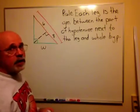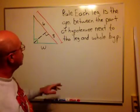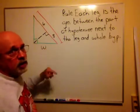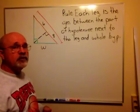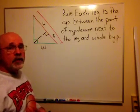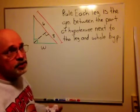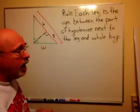Each leg of the right triangle, I've shown the legs of our original right triangle in green, each leg is the geometric mean between the part of the hypotenuse next to that leg, or adjacent to that leg, and the whole hypotenuse.